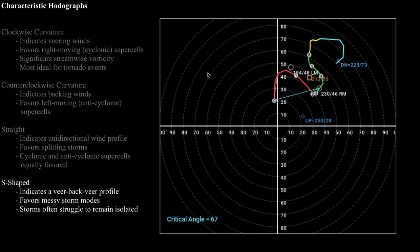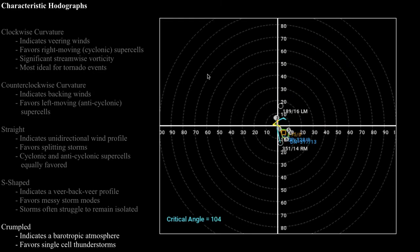Another type I like to call a crumpled hodograph — because that's just what it looks like. In this case the line of the hodograph really doesn't get very far from the origin at all; all the plotted points are very close to the origin, meaning you've got a very weak wind field and not much wind shear. This indicates a barotropic atmosphere, and if you're going to have thunderstorms in this environment, more than likely they're going to be single-celled thunderstorms.